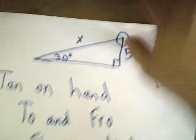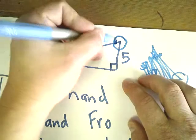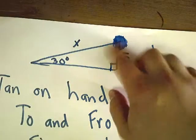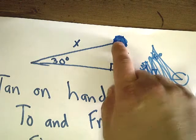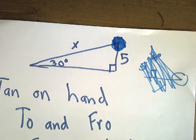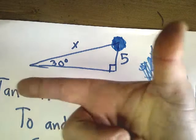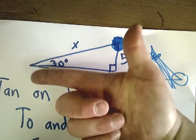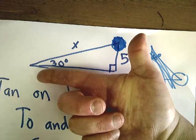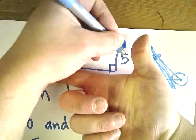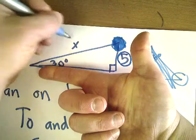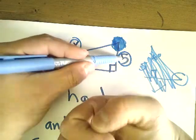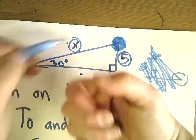First, set this up so you have your little Santa hat — make sure the top is on top. Then set it up so it goes pew pew. Make sure your thumb is pointing up. The two sides we are looking at are this one and this one. We know this side's length and we're looking for the other one.